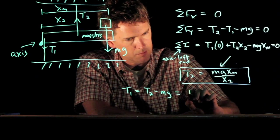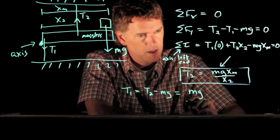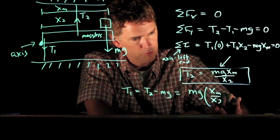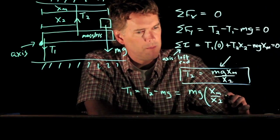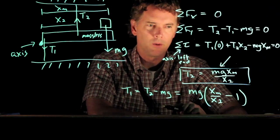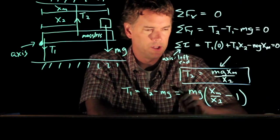And so this becomes mg times xm over x2 minus 1. Okay. We just put all those terms together. You can double check my math.